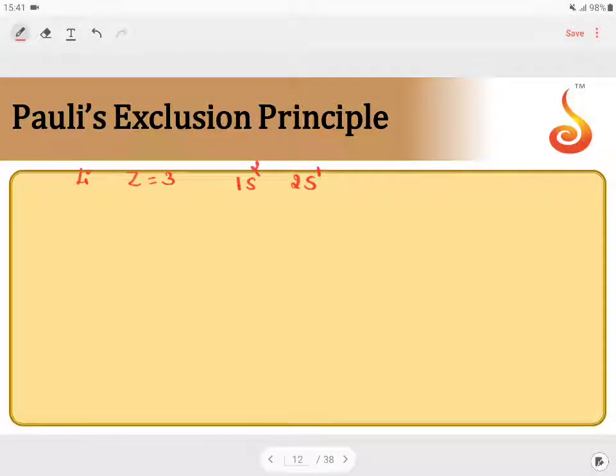The second rule is Pauli's exclusion principle. Before we study the statement, let us take an example.